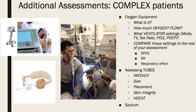For complex patients with respiratory problems, we need to assess their oxygen equipment — what it is, how much oxygen they're getting, how much flow. In the ICU, we do assessments usually every four hours, sometimes more frequently if making changes. If they're on the ventilator, we want to know what settings they're on.